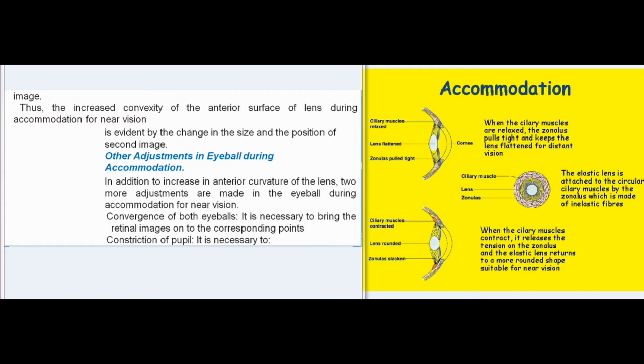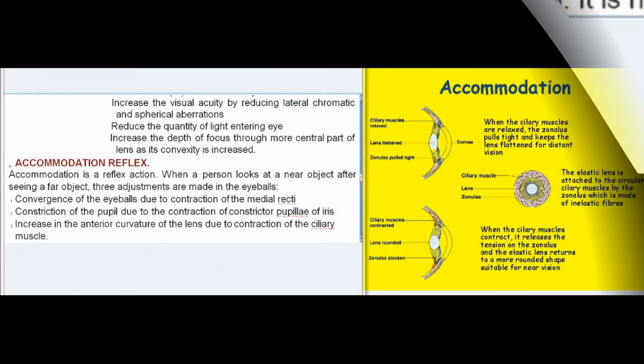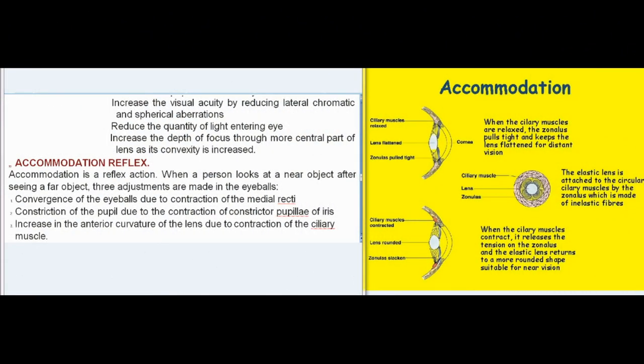In addition to the increase in anterior curvature of the lens, two more adjustments are made in the eyeball during accommodation for near vision: convergence of both eyeballs, which is necessary to bring the retinal images onto corresponding points; and constriction of the pupil, which is necessary to increase visual acuity by reducing lateral chromatic and spherical aberrations, reduce the quantity of light entering the eye, and increase the depth of focus through the more central part of the lens as its convexity is increased.